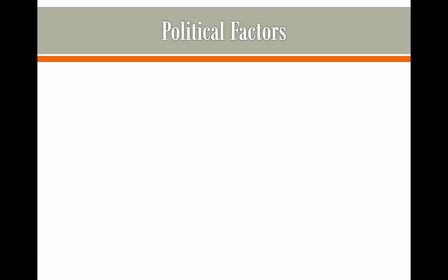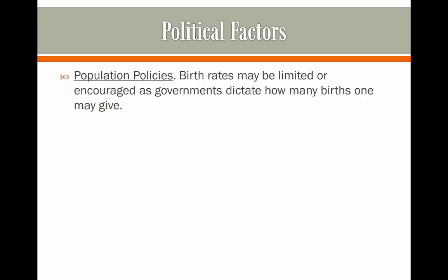Finally, the political factors. Population policies set by governments can alter the birth rate. For example, China had their one-child policy, where families were strongly encouraged and often forced to only have one child. The birth rate decreased greatly — two parents producing only one child slows population growth, and in the long run fewer children being born means the population will decrease over time.